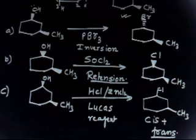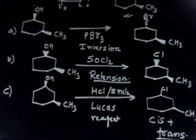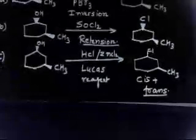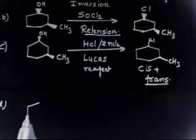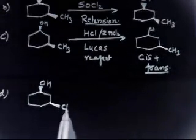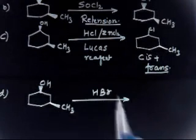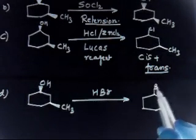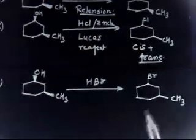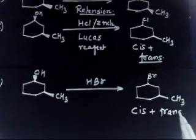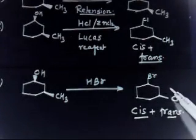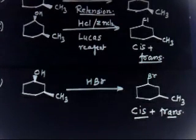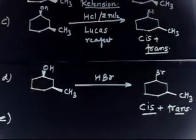Part D: if this reacts with HBr, once again you will have a carbocation. Br⁻ can attach from either side, so you will get both cis and trans products. Because the carbocation is the intermediate, Br⁻ can attack from the top or the bottom — so we get both products.